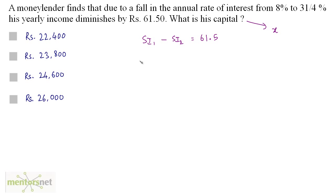So previous interest is PNR upon 100. That's X times N will be 1 because it is the yearly income times the rate. The previous rate was 8% times 8 by 100 minus the current interest. And that is again PNR upon 100. So X times 1 times the new rate is 31 by 4, so 31 by 4 divided by 100. So this becomes 4 times 100. It is equals to 61.5.